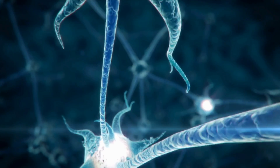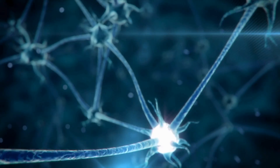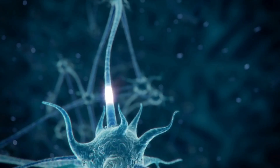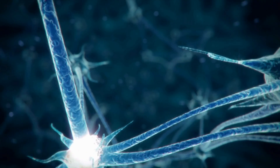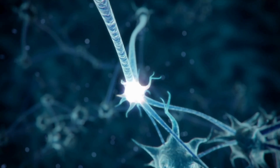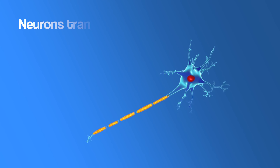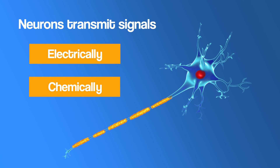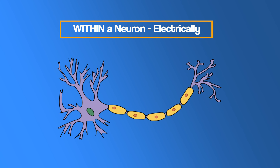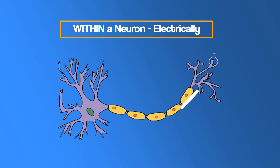Your nervous system is thought to contain somewhere around 100 billion neurons, with your brain containing approximately 80% of them. Neurons enable communication within the nervous system, and they transmit signals electrically and chemically. Within a neuron, signals are transmitted electrically — the electrical signal starts at one end and travels along to the other.